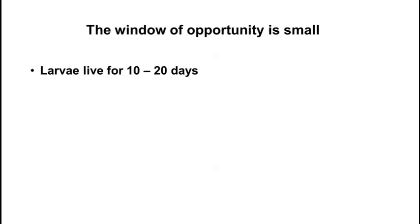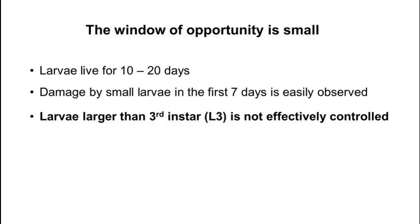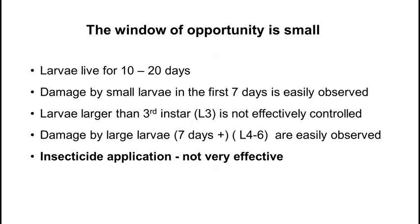The larvae live only for 10 to 20 days and small larvae make the type of damage that we do not easily observe. Larvae that are larger than 10 millimetres are not effectively controlled, so we have a catch-22 situation. Damage by large larvae that are older than 7 days, or L4 to L6 larvae, are easily observed — and that is when we see the damage. But they are already too big to be controlled effectively.